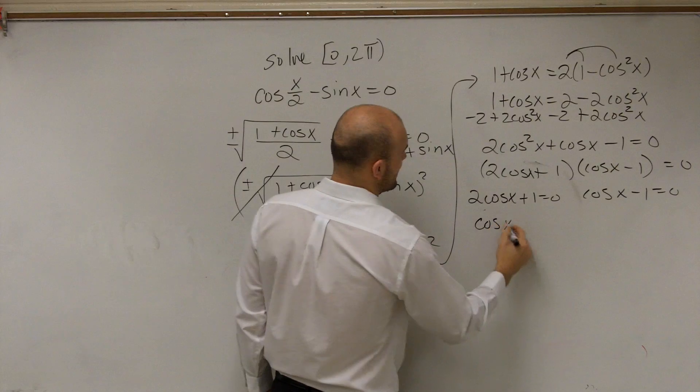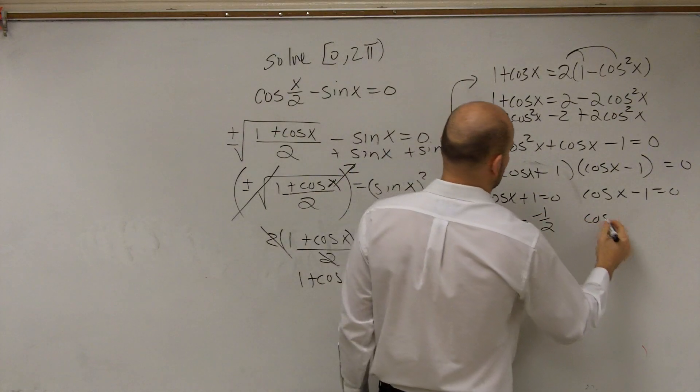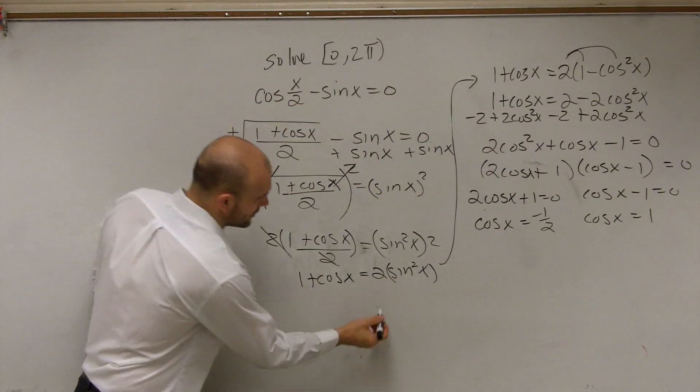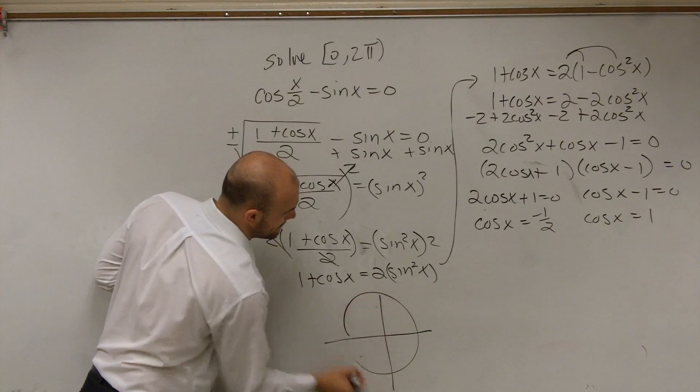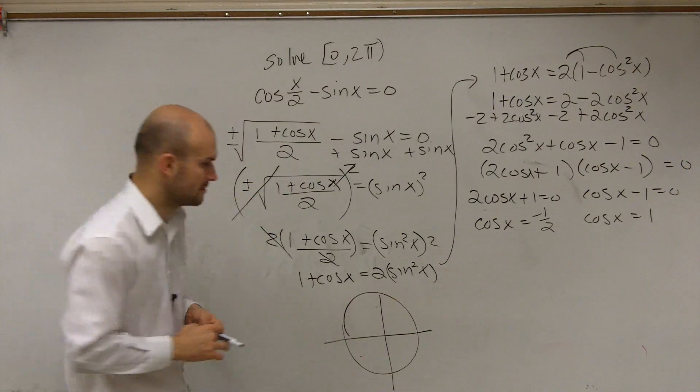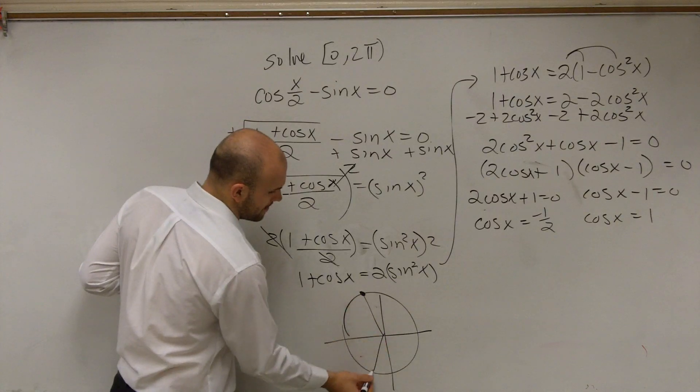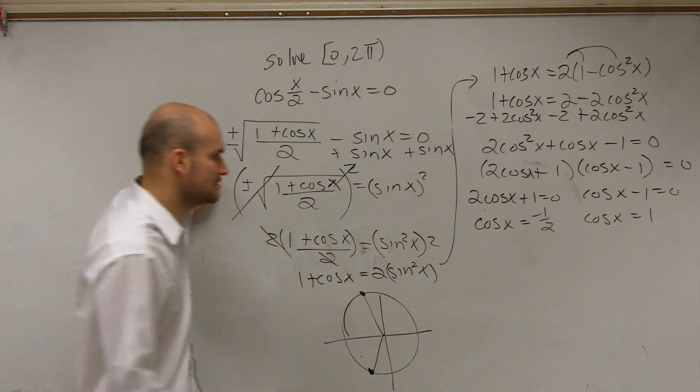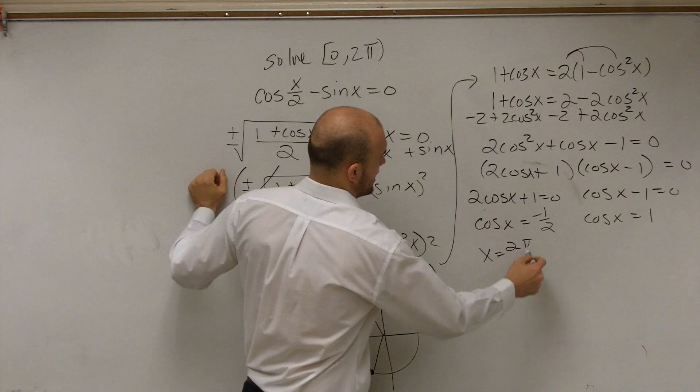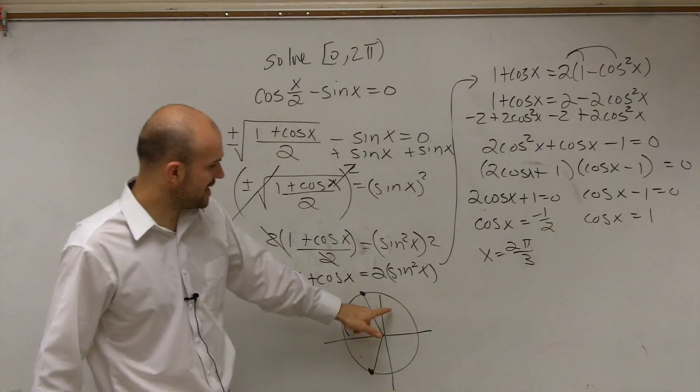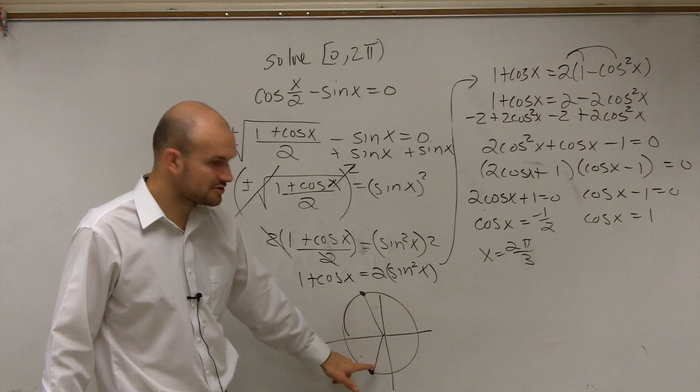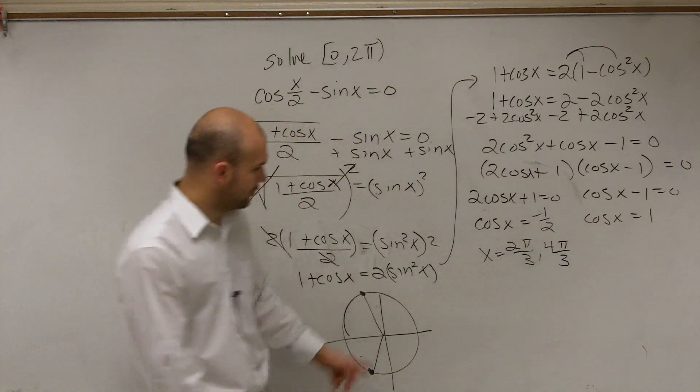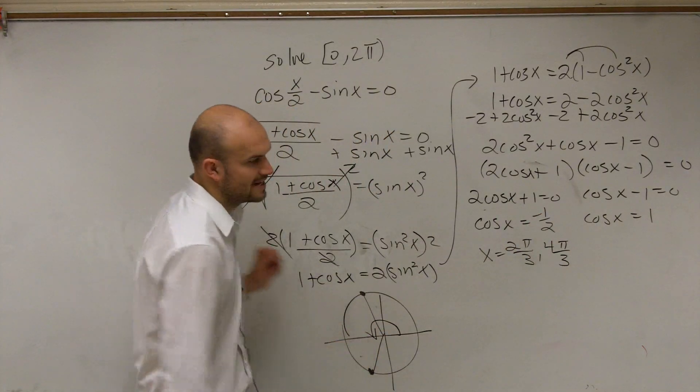Now, by solving, I get cos(x) equals negative 1/2, and I get cos(x) equals positive 1. Then we go to our unit circle and we say, when does the cosine of x equal negative 1/2? Well, there and there. So we need to figure out what those two angles are. So we could say x equals 2π/3. Because this is π/3, 2π/3, 3π/3. And this would be 4π/3. And then x equals 4π/3.